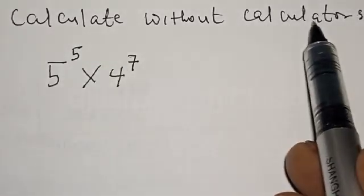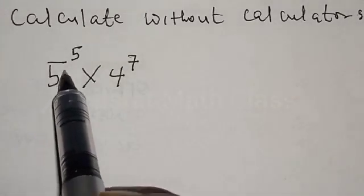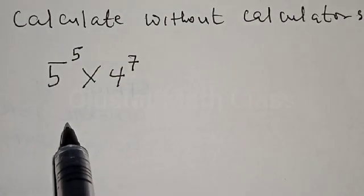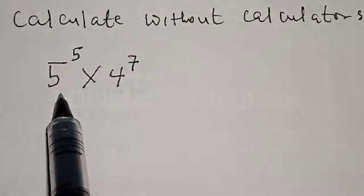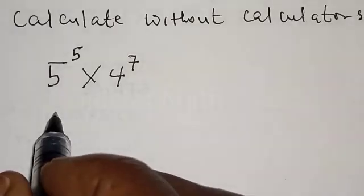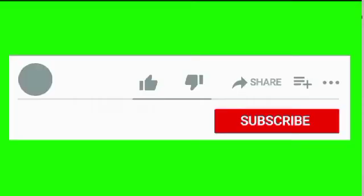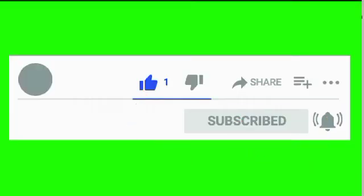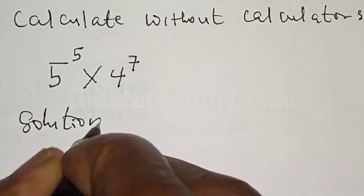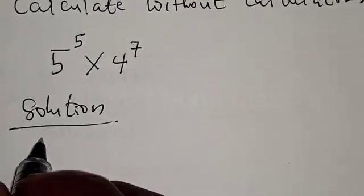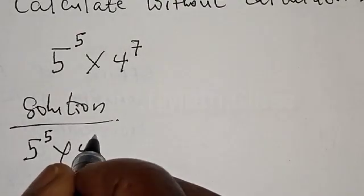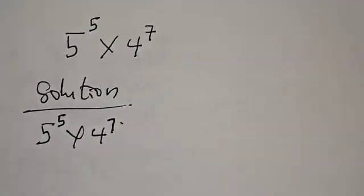Calculate without calculators: 5 raised to power 5 multiplied by 4 raised to power 7. Hi everyone, welcome to my class. In this class we want to look at how we can calculate 5 raised to power 5 multiplied by 4 raised to power 7 without using a calculator. But before we proceed, please don't forget to like, share, comment and subscribe.